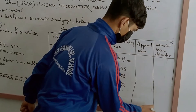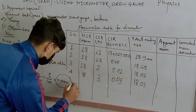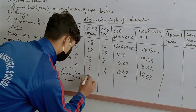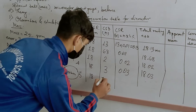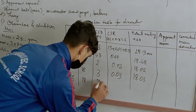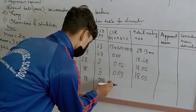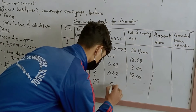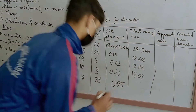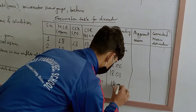Now the fifth reading: the main scale is 18 and the circular scale division is 75, giving 18.75 mm.